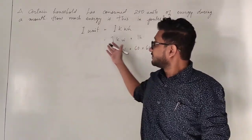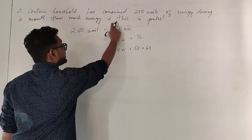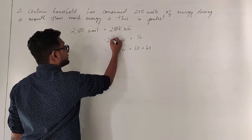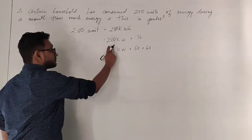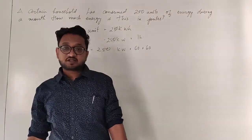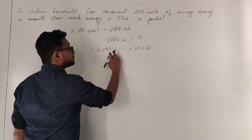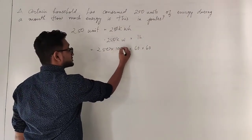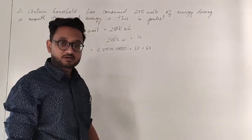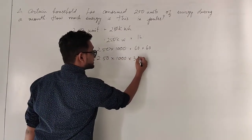Now we have 250 units, so this will be equal to 250 kilowatt-hours. That means 250 kilowatts into one hour, and similarly 250 kilowatts into 60 into 60. Since the question asks for joules, we convert kilowatts into watts by multiplying by 1000, because going from a larger unit to a smaller unit we multiply by 1000.